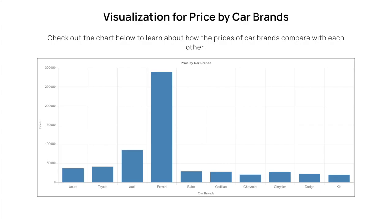The screen reader user is then able to interact with and extract information from the visualization using Voxlens' question and answer mode. [User]: What is the maximum? [Voxlens]: I understand you're looking for maximum. Maximum value of price for car brands is 290,000 belonging to Ferrari.